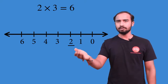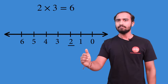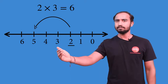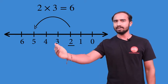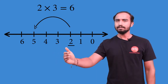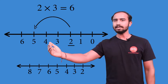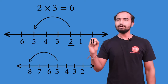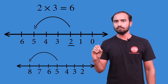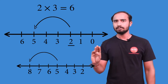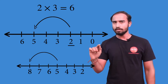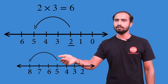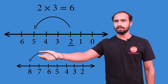The first jump will take us from number 2 to number 5. The second jump will take us from number 5 to number 8. So you jump 3 places from number 2 to reach number 5, and again jump 3 places from number 5 to reach number 8.